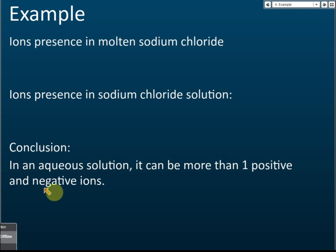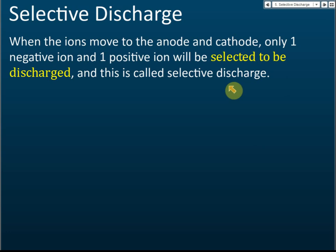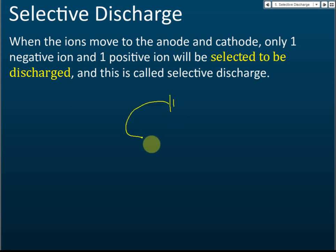In an aqueous solution there can be more than one type of positive ion and more than one type of negative ion. When there is more than one type of ion, selective discharge occurs. When ions move to the anode and cathode, only one negative ion and one positive ion will be selected to be discharged — this is called selective discharge.